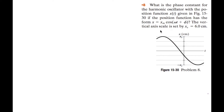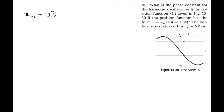The vertical axis scale is set by xs equal to 6 centimeters, so xs is actually the amplitude of the wave. So we can write that down: the amplitude xm is equal to 0.06 meters.